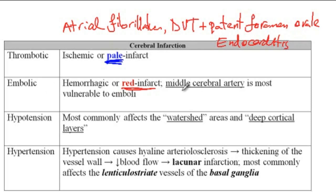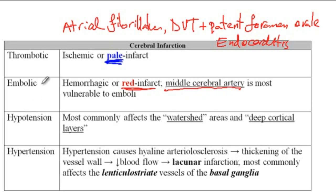Most of these emboli are usually lodging in the middle cerebral artery. The reason is that 80% of the blood carried by the large neck arteries will flow into the middle cerebral artery. Therefore, it's very likely that one of the branches of the middle cerebral artery will be affected by the embolic stroke.